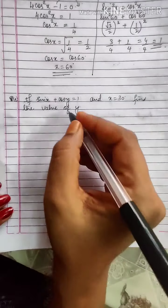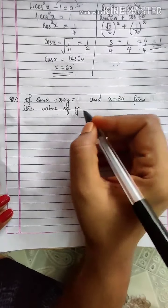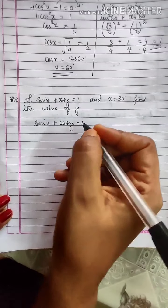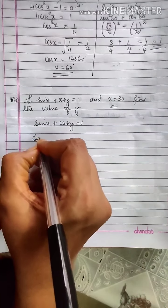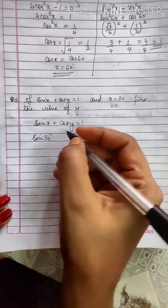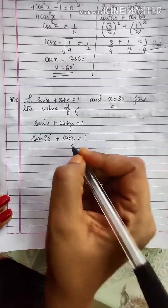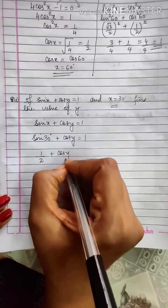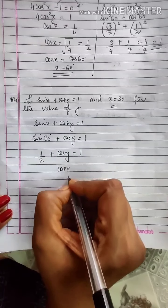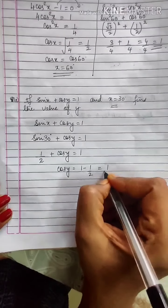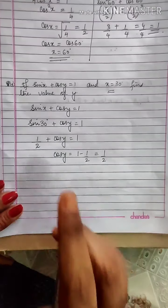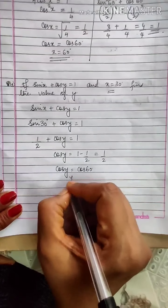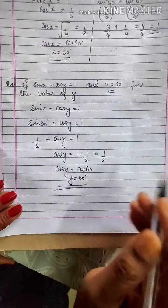Next: if sin x plus cos y is equal to 1 and x equals 30 degrees, find the value of y. Substituting x equals 30: sin 30 plus cos y equals 1, and sin 30 is 1 by 2, so 1 by 2 plus cos y equals 1. Therefore cos y equals 1 minus half equals half, and the angle for which cos is half is cos 60. So y equals 60 degrees.